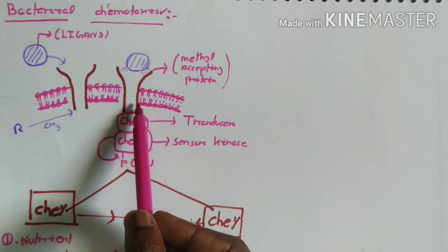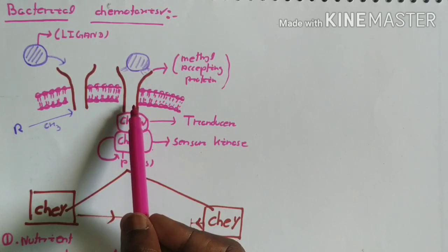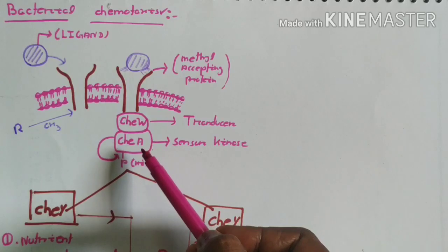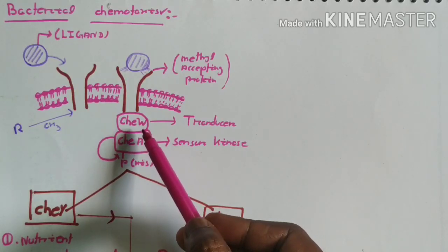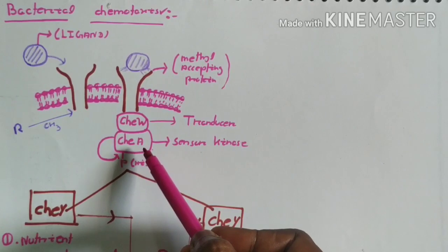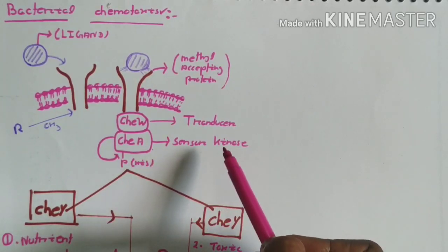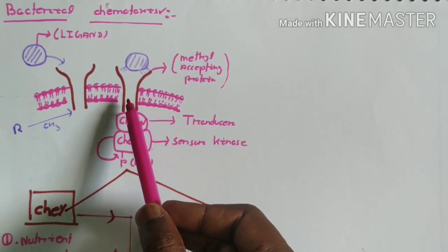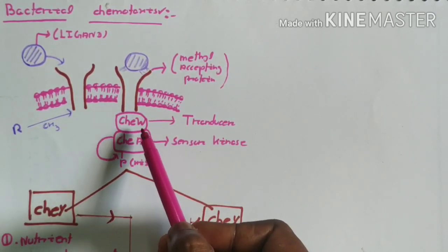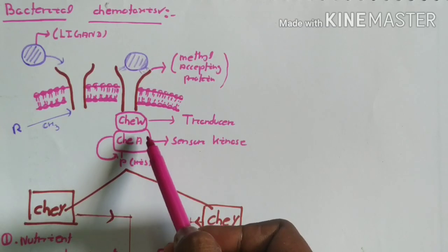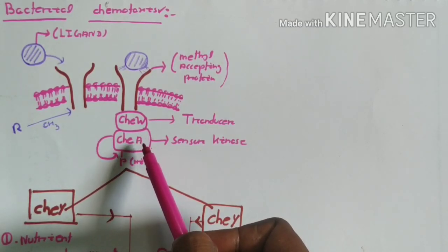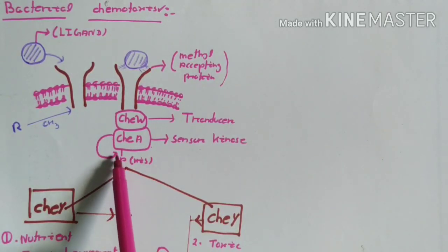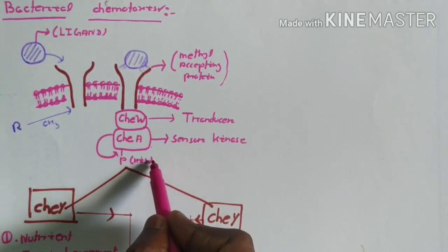After the conformational change in the receptor, it activates a two-protein system: CHEW and CHEA. CHEW is known as the transducer protein and CHEA is known as the sensory kinase protein. When the signal from the MCP receptor comes to CHEW, it transduces it to CHEA, and CHEA autophosphorylates itself at the histidine residue.